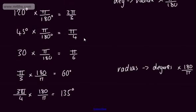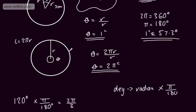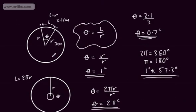We can now convert between degrees and radians and we understand what a radian is. Looking at the arc length: from the definition theta equals L over R, we can rearrange to get the arc length L equals Rθ when the angle is measured in radians. It's that straightforward.